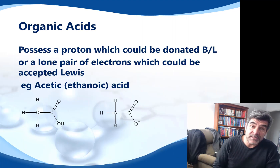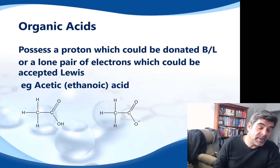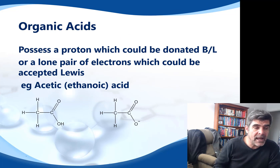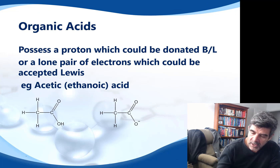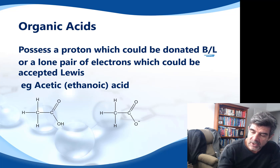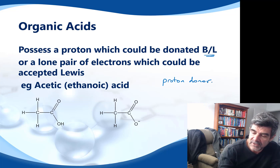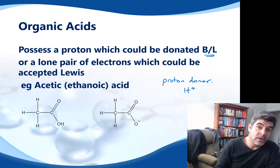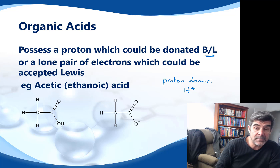Organic acids are probably the easiest one to start with because we've looked at these before. We want to tap into our Bronsted-Lowry definition and also potentially our Lewis definition of acids. The Bronsted-Lowry definition is based on acids being proton donors — that is, they have the capacity to donate an H+ ion — and our Lewis definition of acids as being lone pair acceptors.